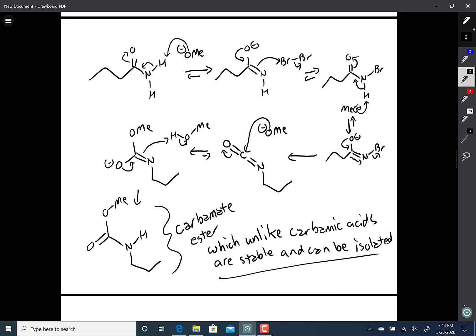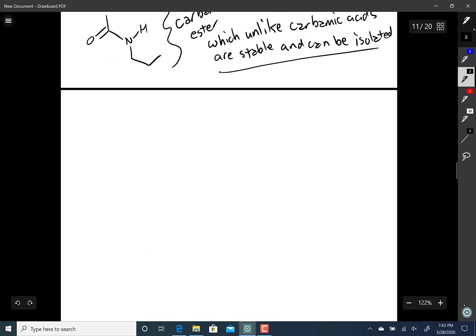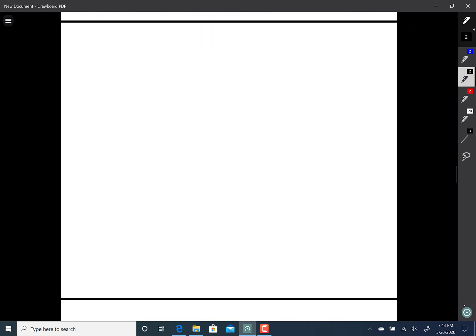But again, we're going to an isocyanate intermediate, but you cannot isolate, you cannot stop at the isocyanate in the Hoffman. So that brings us to another rearrangement. And it's called the Curtius rearrangement.